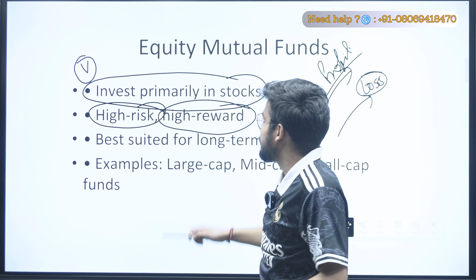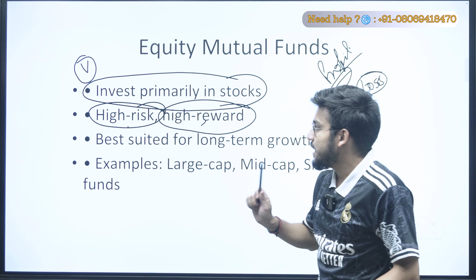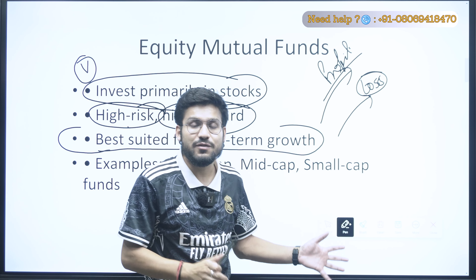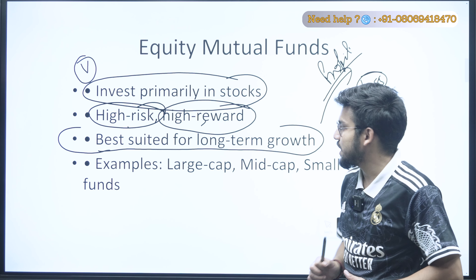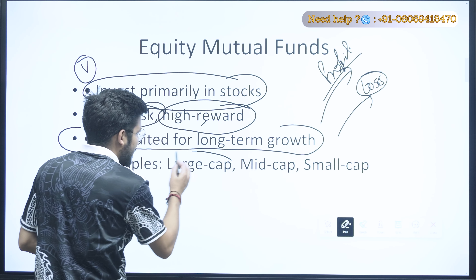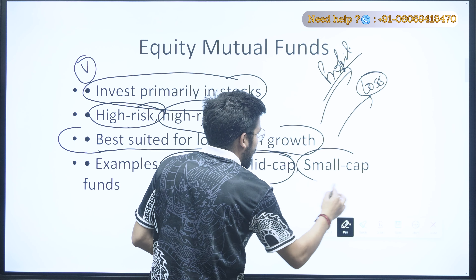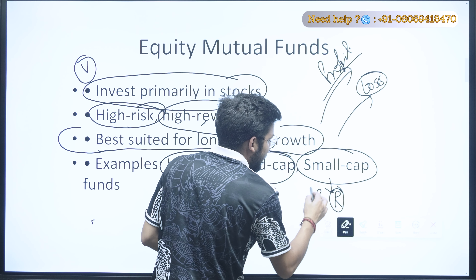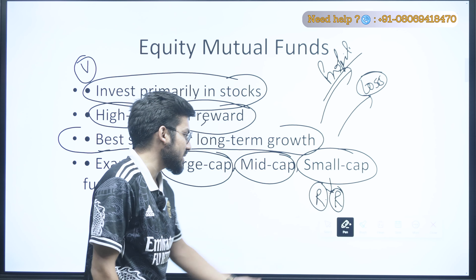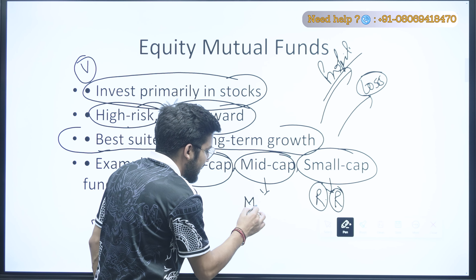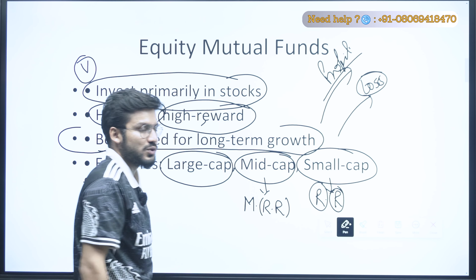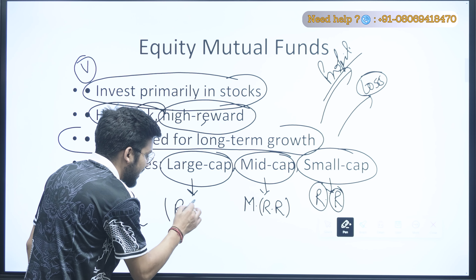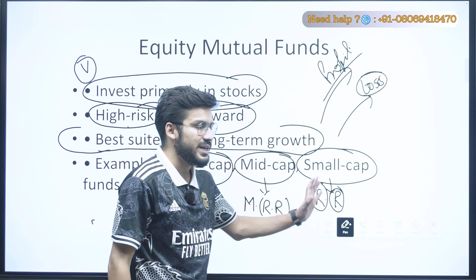The first type of mutual fund is the Equity Mutual Fund. It invests primarily in stocks, so it is very much impacted by the volatility of the market. That is why it has high risk as well as high reward. If the volatility is in your favor you gain profit, but if the volatility is against your prediction you can face a huge loss. It is written here: high risk as well as high reward.